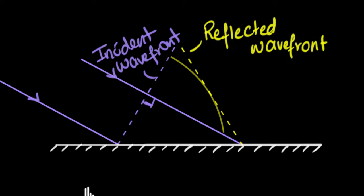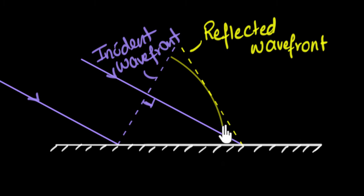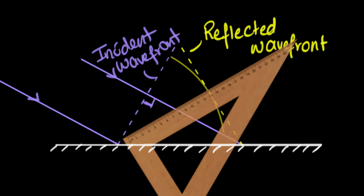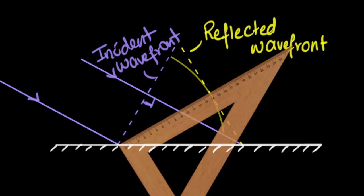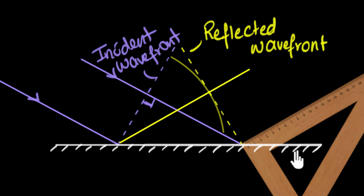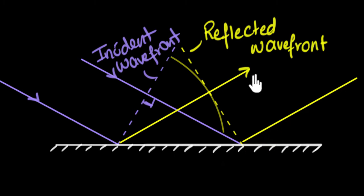What's next? We're trying to prove angle of incidence equals angle of reflection, and we draw those angles with respect to rays of light. We have the incident ray, which means we now have to draw the reflected ray. The rays are perpendicular to the wavefront, so I bring in my set square again and draw a ray from here to here. Let me draw a second reflected ray as well. These are our reflected rays — both perpendicular to the reflected wavefront — and we are done with our construction.